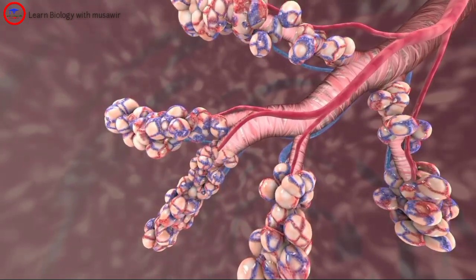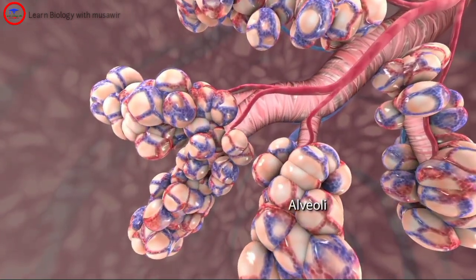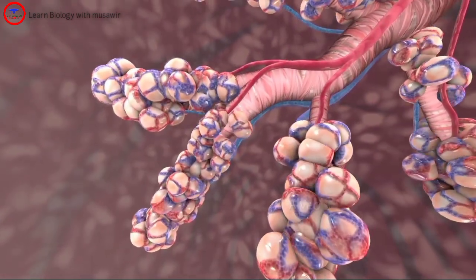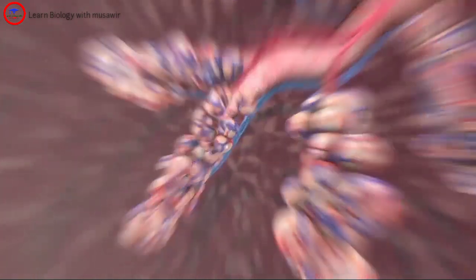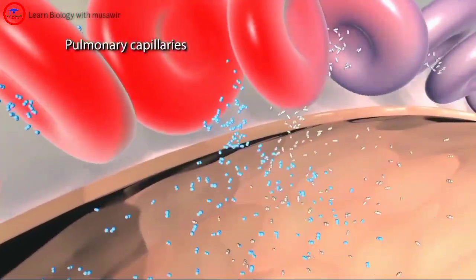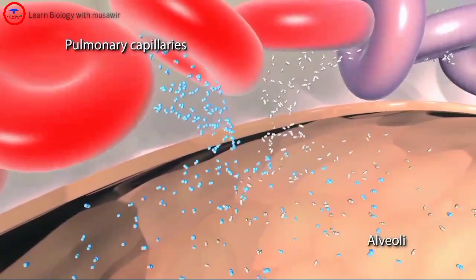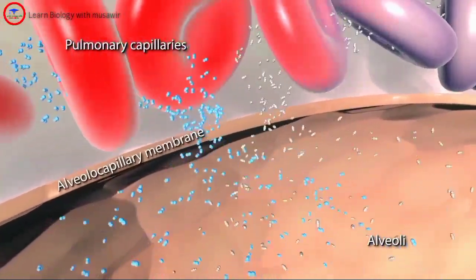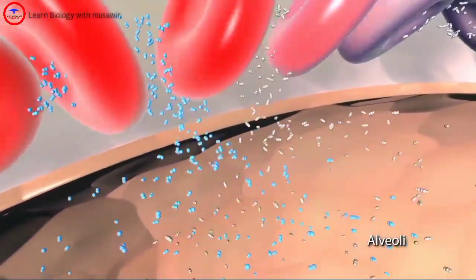Then into tiny elastic sacs called alveoli, where gas exchange occurs. Pulmonary capillaries and alveoli share a thin membrane through which gas exchange occurs.